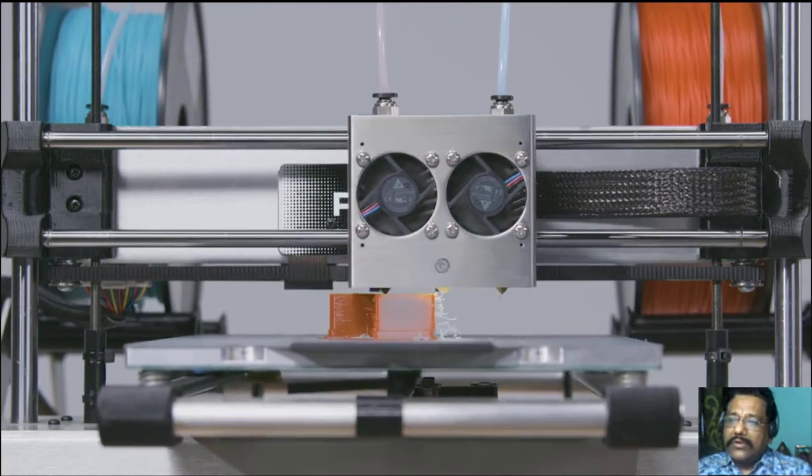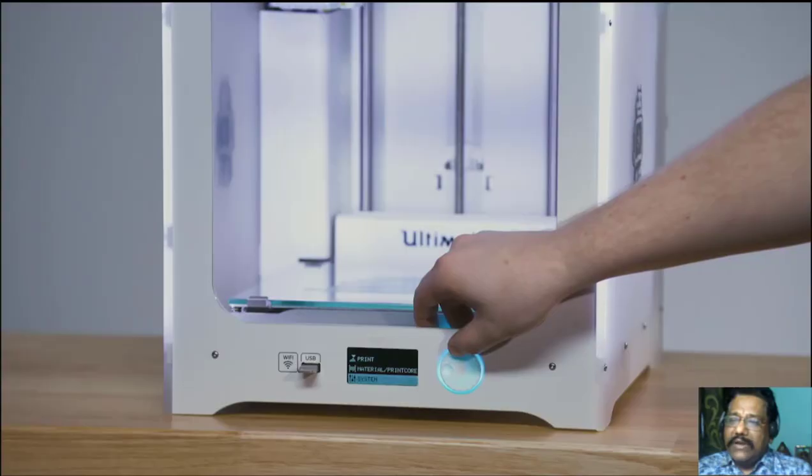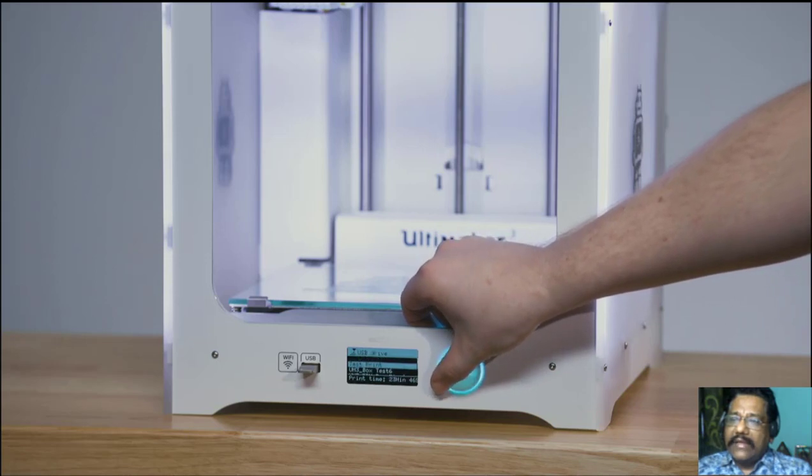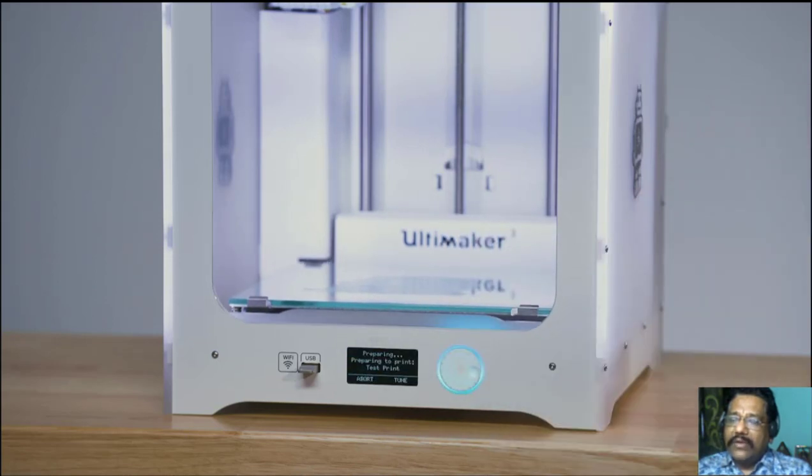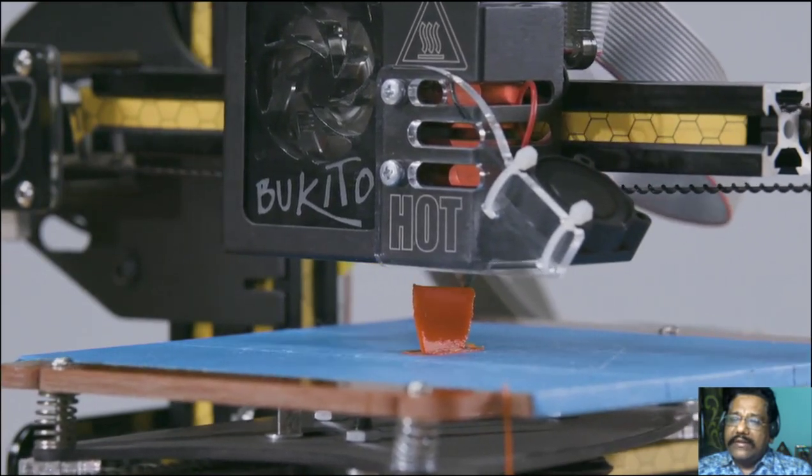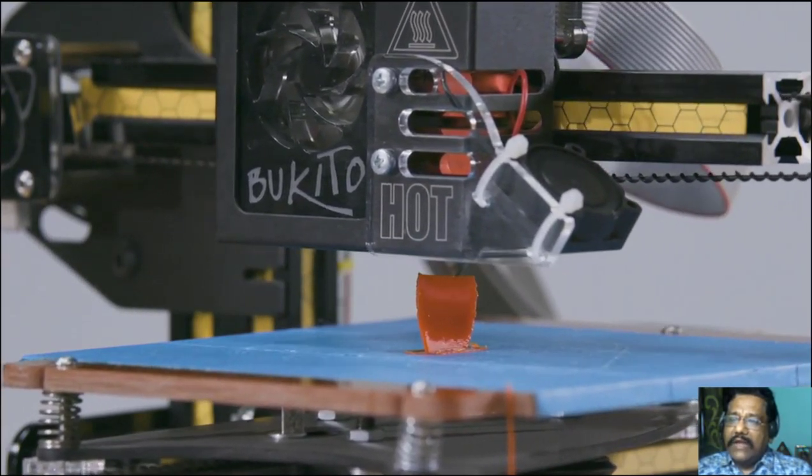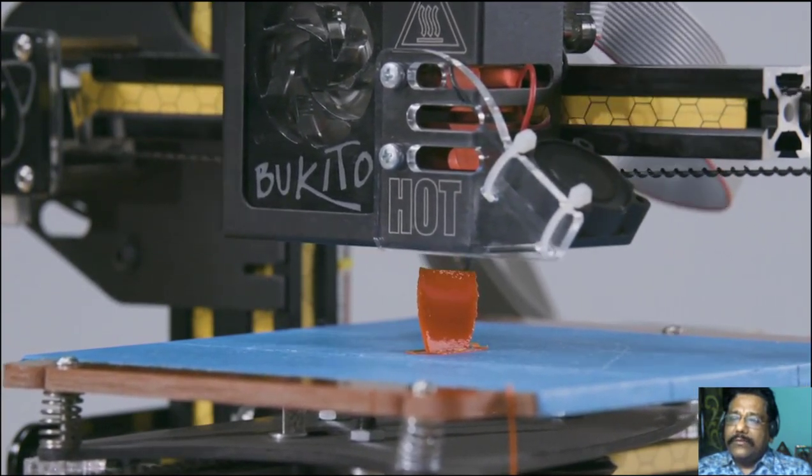Usually talking anywhere between Rs. 15 lakh to Rs. 40 lakh for a printer like this, and the actual resin is a lot more expensive than a roll of filament. That's one of the reasons in this course we're going to be focusing on learning about FDM printing, Fused Deposition Modeling.